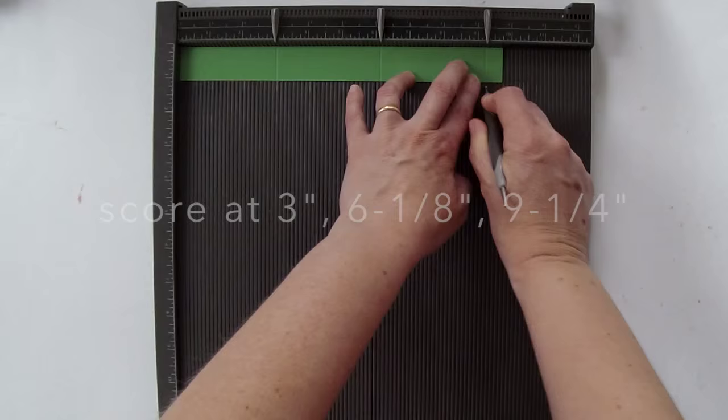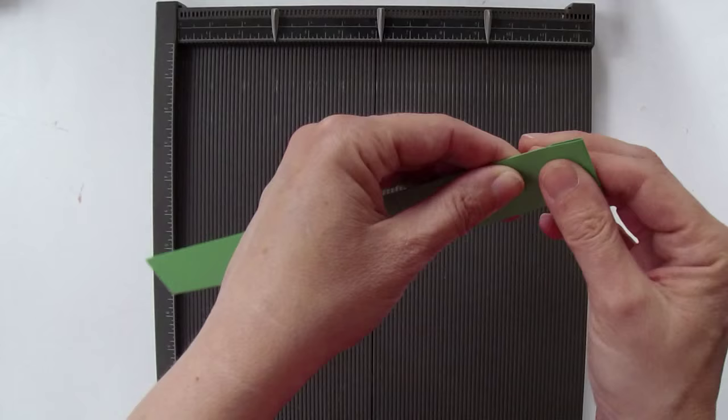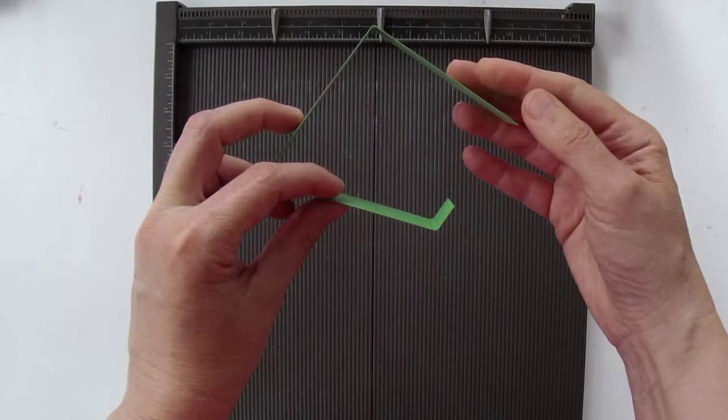And then we're going to bend this piece along all the score lines just inward. You're going to have a piece like this and we're going to take our Tombow glue.